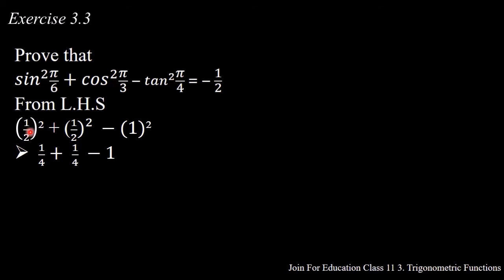The square of 1/2 equals 1/4. The square of 1/2 equals 1/4. The square of 1 equals 1. We take 4 as the LCM of 4, 4, and 1. Here will be 1 + 1 - 4. Let us go forward. 1 + 1 - 4 equals -2/4.